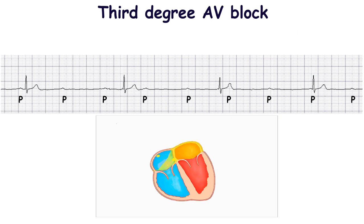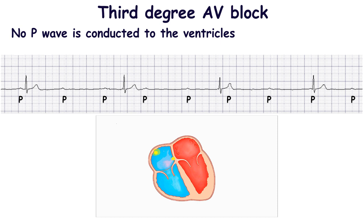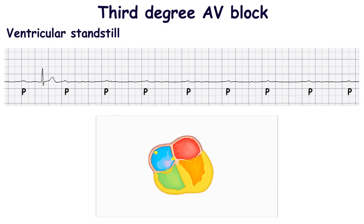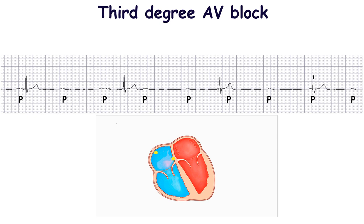In the case of the third degree AV block, no P wave is conducted to the ventricles at all. Usually in this case, the QRS complexes originate from the ventricles or a lower part of the AV node. In other cases, ventricular standstill occurs. On ECG, the P waves are not related to the QRS complexes. Intervals between the P waves are constant, and intervals between the QRS complexes are constant too. The third degree AV block is also called complete heart block.